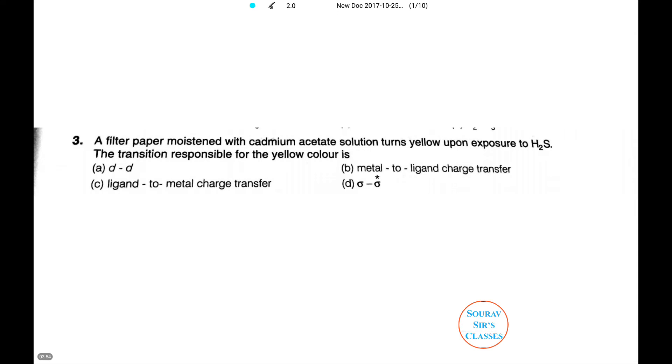The filter paper is turned yellow due to the ligand to metal charge transfer complexes. Now why does this happen? Ligand to metal charge transfer occurs when the metal has high oxidation state, so it has a small size, higher ionization potential, and vacant orbitals.